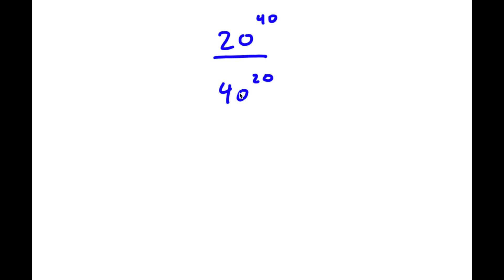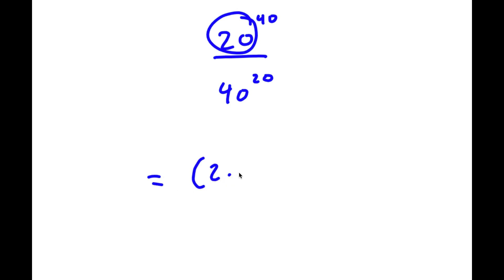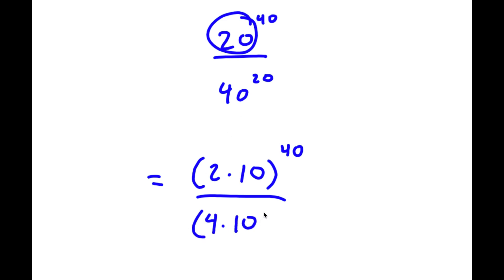So in this problem, I have 20 to the power of 40 over 40 to the power of 20. To start, I'm going to rewrite 20 as 2 times 10, giving 2 times 10 to the power of 40. And I'm going to rewrite 40 as 4 times 10, so over 4 times 10 to the power of 20.